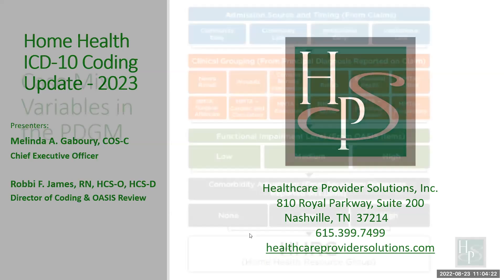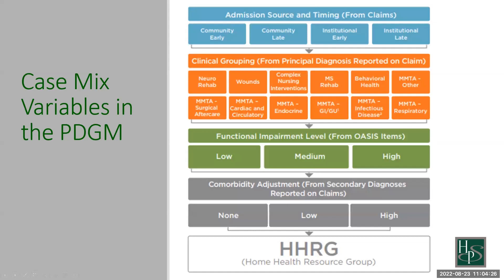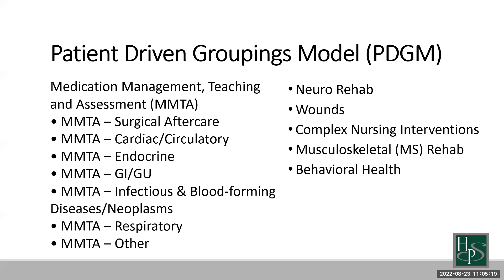We're going to start with the PDGM HIPPS code map that many of you have seen before. The key component of the PDGM model as it relates to our webinar today is the primary or principal diagnoses in the orange section on the screen, specific to the primary diagnosis found on your claims. In the gray boxes toward the bottom are the comorbidity adjustments specific to secondary diagnoses found on your claims. We'll discuss significant changes being proposed that will directly impact these PDGM calculations.